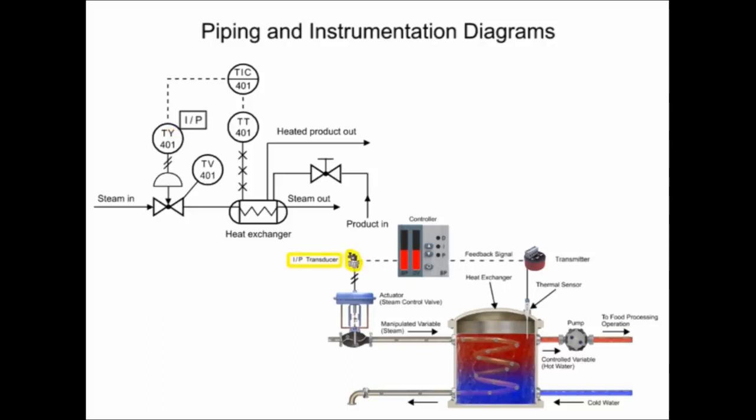The transducer converts an electronic signal to a pressure signal and is indicated by the square containing the letters I and P.